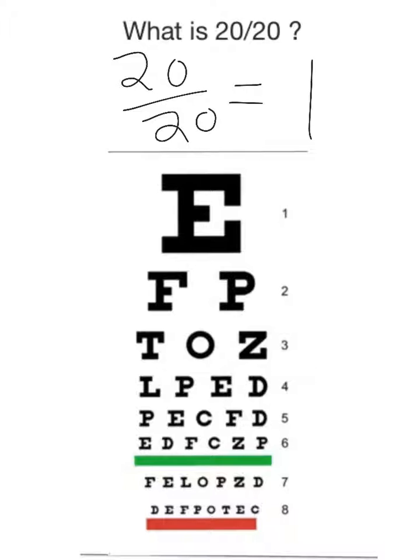The reason why it's written as 20 divided by 20 instead of 10 divided by 10 or 5 divided by 5 is because you're always 20 feet away from the eye chart. The top number represents the 20 feet. The bottom number represents the size of the letter.